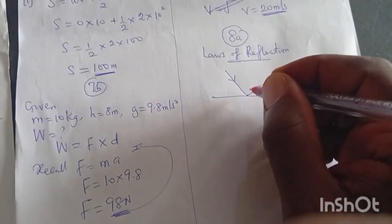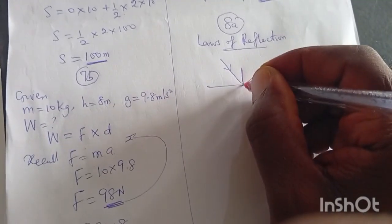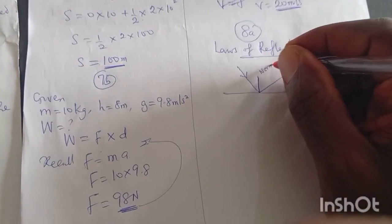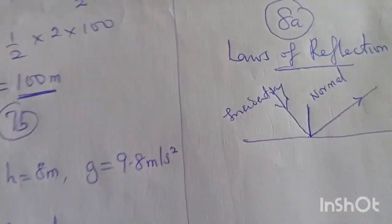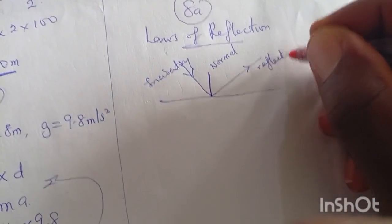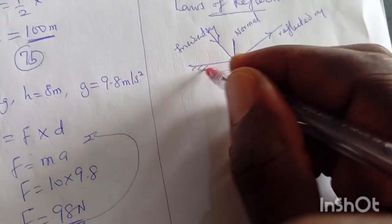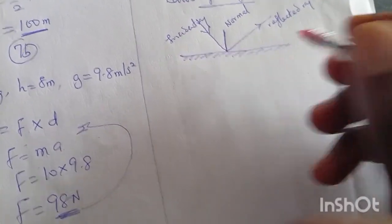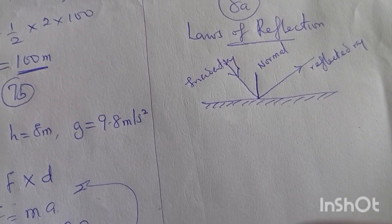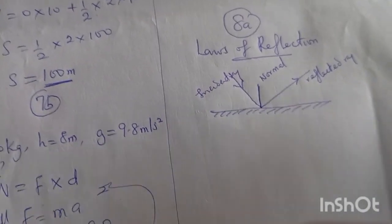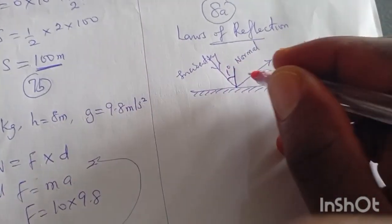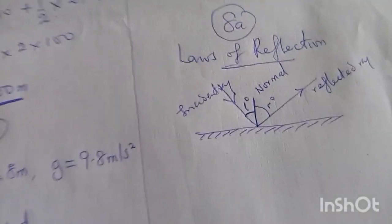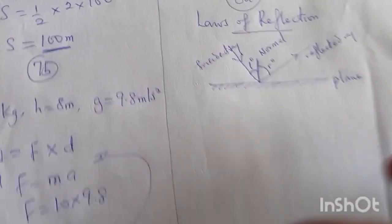If I have my incident ray I will have my reflected ray. I draw a line that separates the two rays — we call that line the normal. This is the normal, this is the incident ray, and this is the reflected ray. This is my plane mirror. The angle between the incident ray and the normal is called the angle of incidence, and the angle between the reflected ray and the normal is called the angle of reflection.